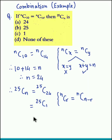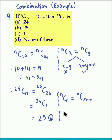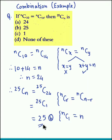And 25C1 is nothing but 25, which is option B. Here we used the property NC1 is equal to N. So using this we get the answer as 25, which is option B.